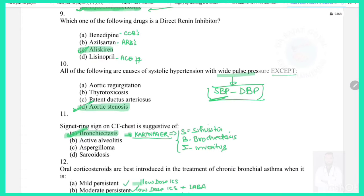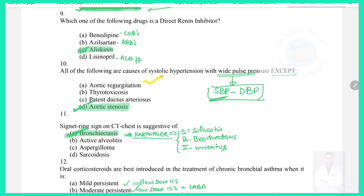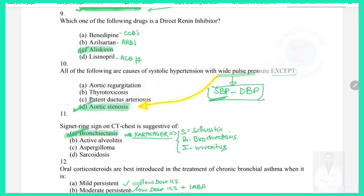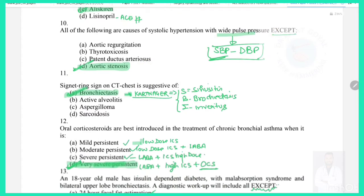Question 10: Which of the following causes systolic hypertension with wide pulse pressure except — pulse pressure equals systolic BP minus diastolic BP. Thyrotoxicosis, patent ductus arteriosus, and aortic regurgitation cause wide pulse pressure. However, aortic stenosis causes narrow pulse pressure, so the answer is aortic stenosis.